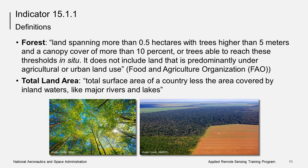According to the FAO definitions, forest is land spanning more than 0.5 hectares with trees higher than 5 meters and a canopy cover of more than 10%, or trees able to reach these thresholds in situ. It does not include land that is predominantly under agriculture or urban land use. There are more specific definitions, including areas with young trees expected to reach a canopy cover of at least 10% and tree height of 5 meters or more. It also includes areas with mangroves in tidal zones as well as rubber wood, cork oak, and Christmas tree plantations, but excludes tree stands in agricultural production systems such as fruit tree plantations, oil palm plantations, olive orchards, and other agroforestry systems when crops are grown under tree cover.